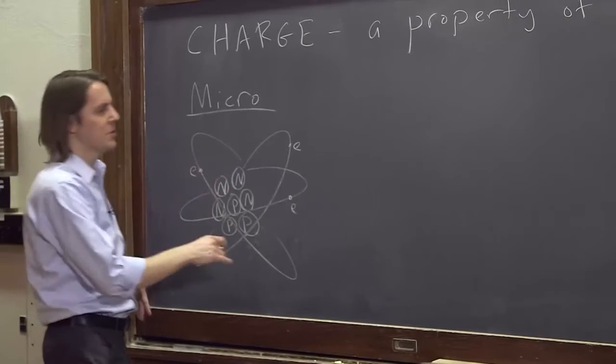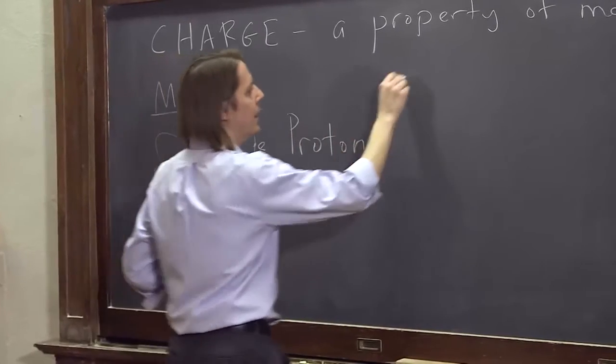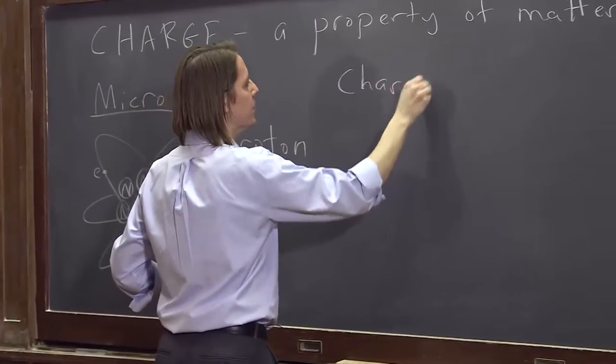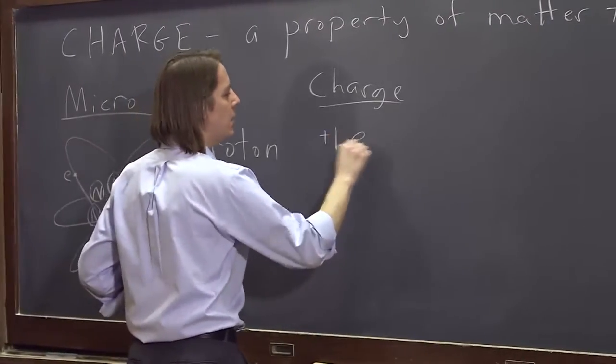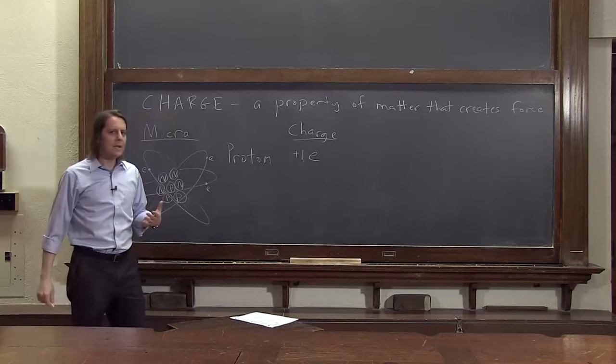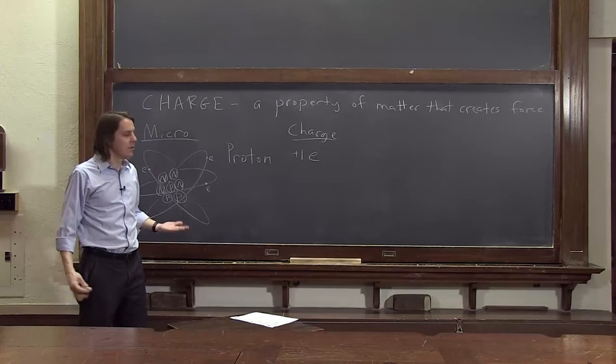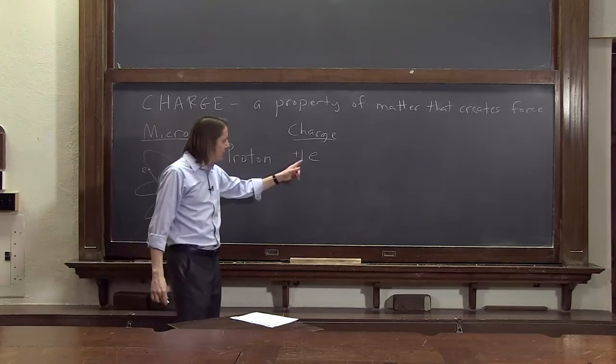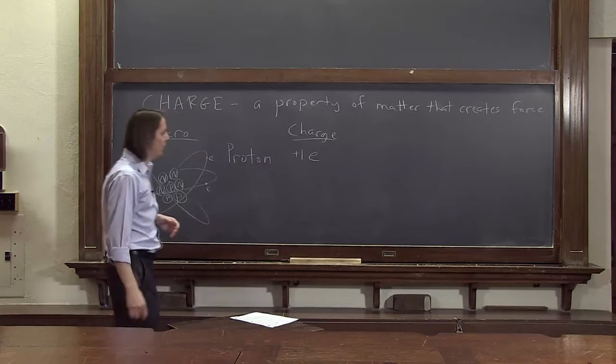Well, it's in these subatomic particles. So we can look at the proton and ask ourselves, what is its charge? The charge of a proton is plus one E, where E is the unit. E means elementary charge unit. It's defined as the charge of a proton. So this is 1.00, as many zeros as you want. The charge of a proton is exactly one E.